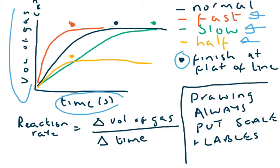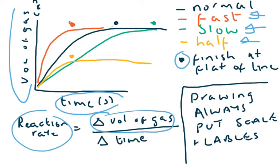The reaction rate is worked out by the change in the volume of gas being given off — that is what delta means, the triangle — divided by the change in time.